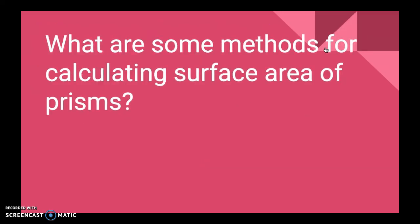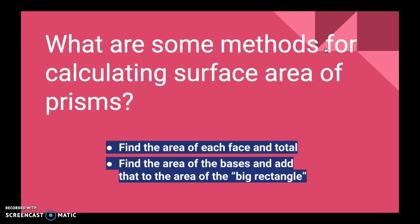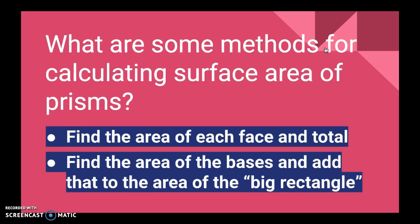So when we're trying to find surface area, we've got a couple different methods that we can use. The first one is just to find the area of each face and total up those areas. And the second one is to find the area of the bases and add that to the area of the big rectangle.